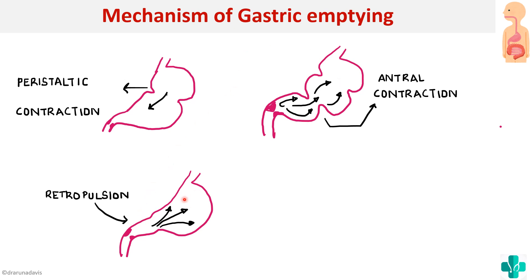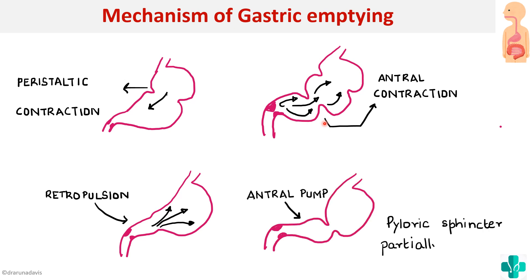The chyme moves back due to the antral contraction, and these movements help in the proper mixing and grinding of the chyme. Once it is properly mixed, the pyloric sphincter will partially open so that well-ground particles can be squirted into the next segment. The pyloric sphincter does not open fully — it only partially opens so that only well-ground particles can pass into the duodenum.